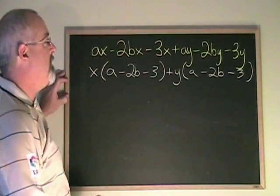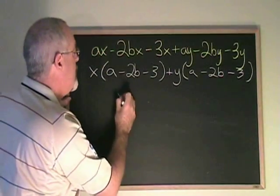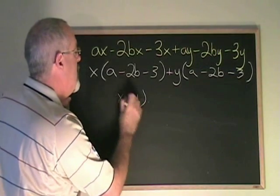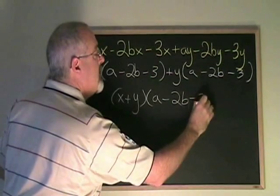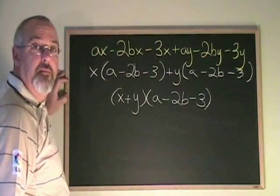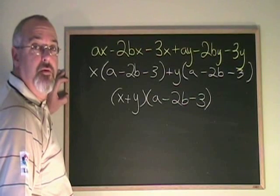I can rewrite this expression as x plus y, a minus 2b, minus 3, using the distributive property. This is a six-term grouping.